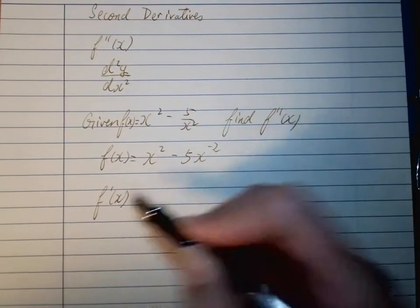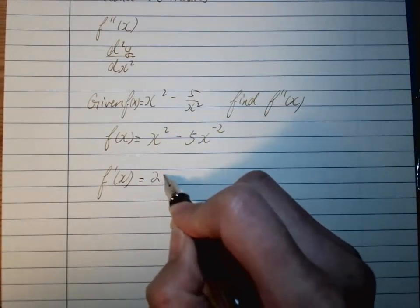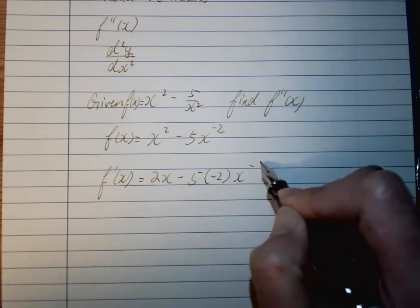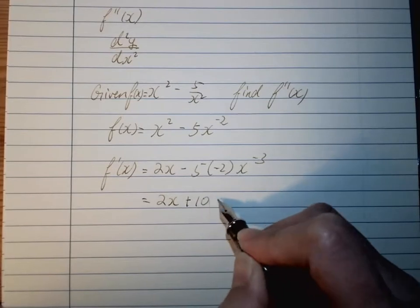Now I can differentiate the first time, which becomes 2x - 5(-2)x^(-3). Fixing it a little bit, we have 2x + 10x^(-3).